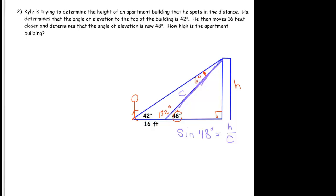Now we can actually figure out what C is using the law of sines, because the opposite side to the 6-degree angle is 16 feet. So we have that one set of information. The sine of 6 degrees divided by 16 equals — and the opposite side to the 42-degree angle is C — so that equals sine of 42 degrees divided by C.